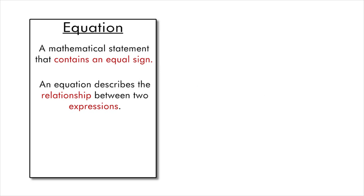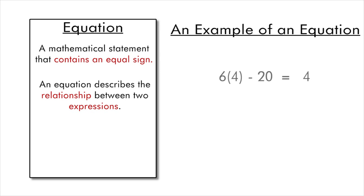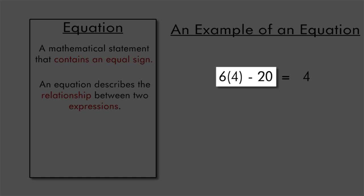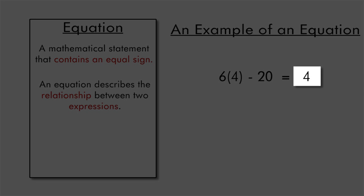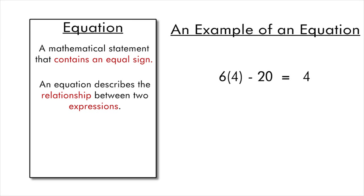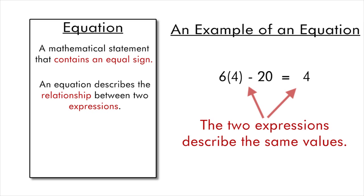For example, the equation 6(4) - 20 = 4 shows that the two expressions, the left-hand side of 6(4) - 20 and the right-hand side of 4, mean the exact same thing. They are equivalent.